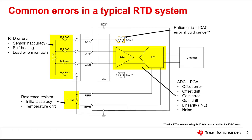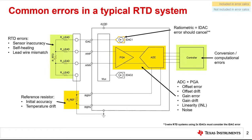The RTD itself can contribute error in the form of variation in sensor accuracy, self-heating, and lead wire mismatch. Finally, the controller can introduce computational errors in the resistance to temperature conversion process. While all of these errors are important, the total error calculations only include those errors that come from the signal chain — the ADC, PGA, and reference resistor errors, highlighted in orange. Errors from the sensor or conversion process are not included and are highlighted in blue.